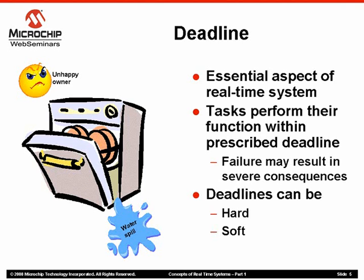In our dishwasher system, say the water manager task is currently filling the water in the chamber. When the dishwasher is full with water, the water manager task should immediately shut the water intake. Otherwise, the water may spill out of the dishwasher. Every task in a real-time system is characterized by its deadline. A task is expected to perform its function before the deadline. The time allocation or the deadline may be absolute or relaxed. For example, if a task must perform its function within one second, then the deadline is an absolute deadline. On the other hand, if the task should perform its function in about one second or so, then the deadline is relaxed.